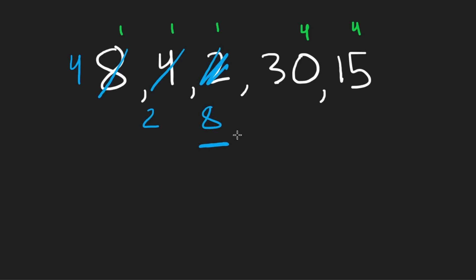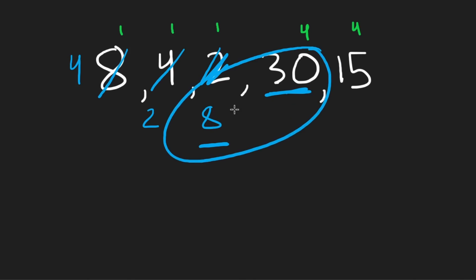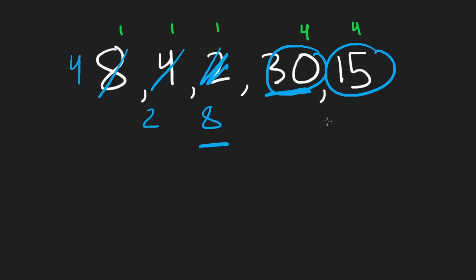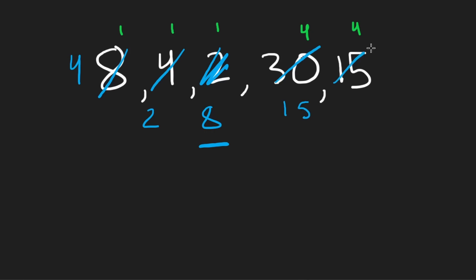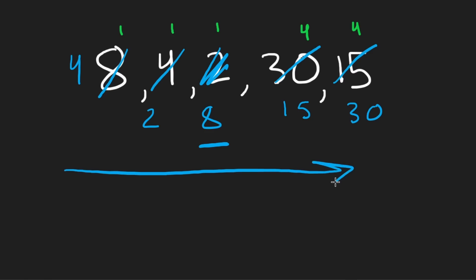We continue scanning left to right. Eight is definitely greater than two, so we swap those. Then we compare eight to 30 — 30 is greater than eight, so no swap needed there. We keep going until we get to 30 and 15. Thirty is definitely greater than 15 and they have the same number of set bits, so we swap those two. That was one full pass through the array.